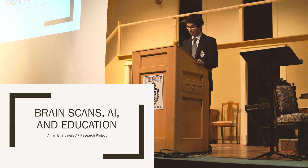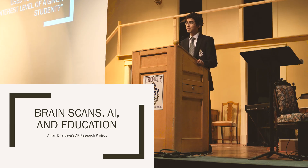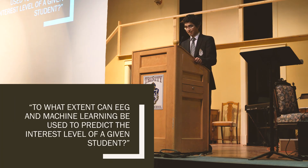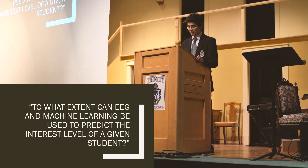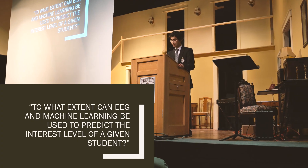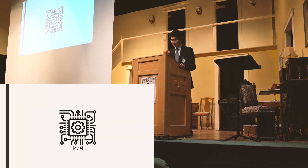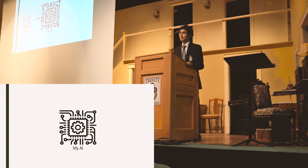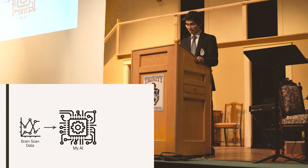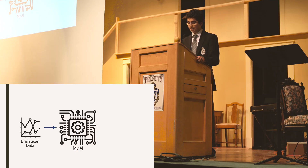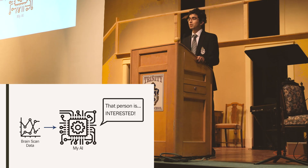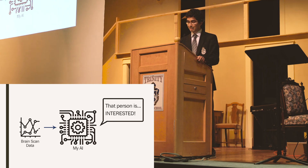I'll show you my brain waves in a second. For my AP research project, I'm doing a full year project on this question: to what extent can EEG and machine learning be used to predict the interest level of a given student? EEG is the name of this specific brain scanning technique. Basically, I am trying to make an AI that I can input brain data into, and it will tell me whether or not that person is interested - and I want it to be correct as much of the time as possible.